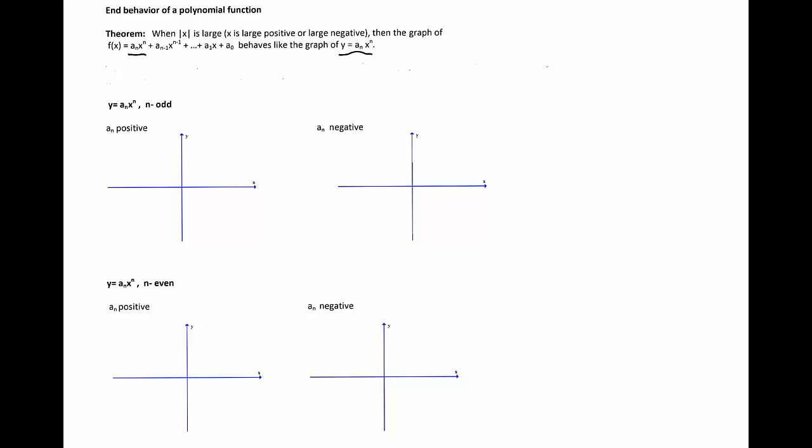We discussed the graphs of such functions in one of the previous videos, so let's consider the four cases that could occur. Suppose n is an odd number and a_n is positive.